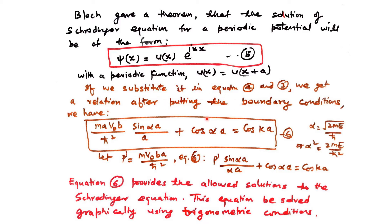After substituting Bloch's function and applying boundary conditions, we get the final relation: (mαV₀b/ħ²) · (sin αa / αa) + cos αa = cos ka, where α = √(2mE)/ħ. Defining P' = mαV₀b/ħ², the equation becomes: P'(sin αa / αa) + cos αa = cos ka. This is the Kronig-Penney equation, which gives the allowed solutions to the Schrödinger equation.